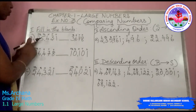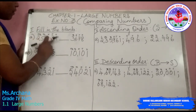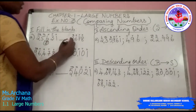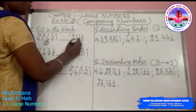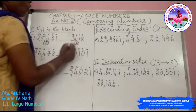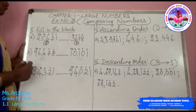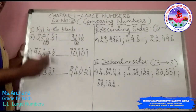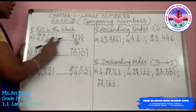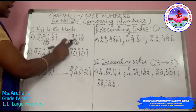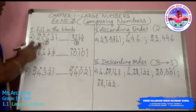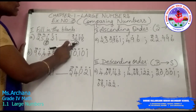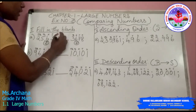For example, this first number has 5 digits, and this second number has 4 digits. So without reading the number, I have just counted the number of digits and I am coming to a conclusion that this 5-digit number is greater than this 4-digit number. So 25,431 is greater than 3,678.